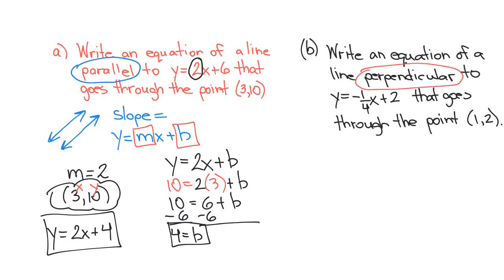Our slope must be perpendicular. So the existing slope is a negative one-fourth, but I want a perpendicular slope. Remember that symbol? That symbol means perpendicular. So to get perpendicular slopes, they have to be the opposite. So my new slope will be positive, and then reciprocal. So what's the reciprocal of one over four? It is four over one. We don't normally write four over one — we would just say four.